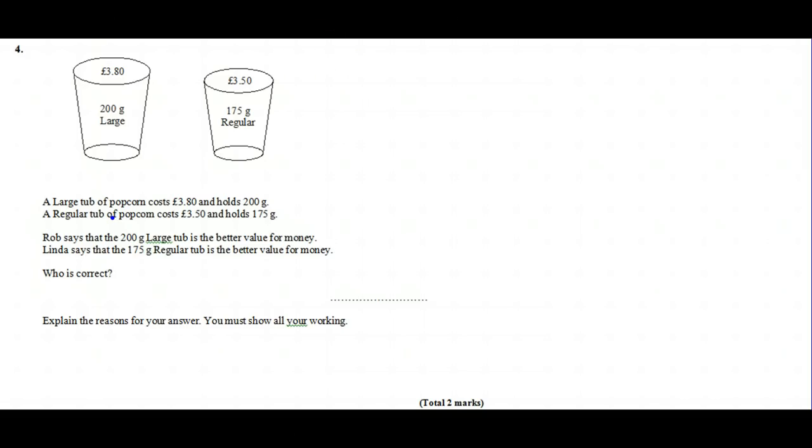The easiest way to work this out is one simple calculation: work out the price per gram or the grams per pound. In this case, we're going to do grams per pound. So for a pound, do you get more grams in the large tub or the regular tub? In order to work this out, first, for the large one, grams per pound...